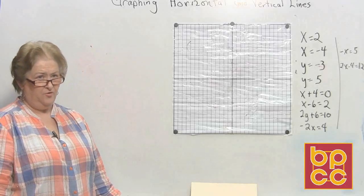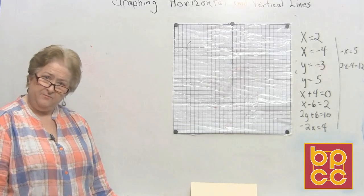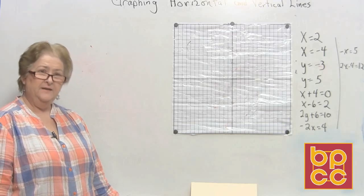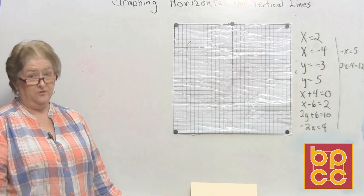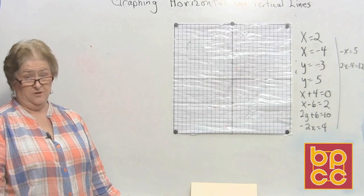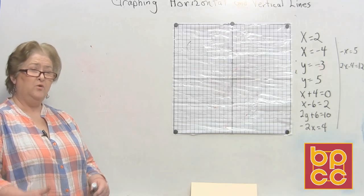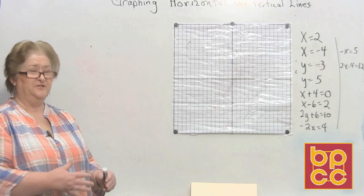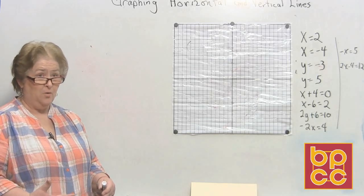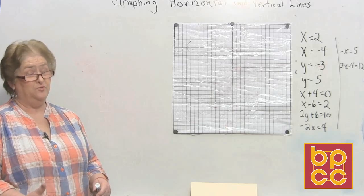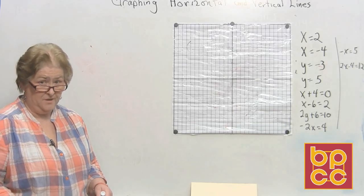Now we've graphed standard form, and we've graphed slope-intercept form, and now we're going to graph lines that are going to be either vertical or horizontal. They're going to be that way because all we're going to have is an X or a Y. If you're only given an X or Y, you only have two choices — it's either going to be horizontal or it's going to be vertical.